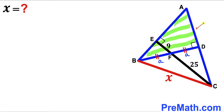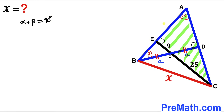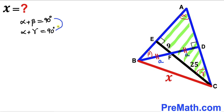Let's focus on right triangle ADB. I'm going to label one angle as alpha and another as angle beta. We know one angle is 90 degrees, so therefore the sum of angles alpha and beta must equal 90 degrees — in other words they are complementary angles. Now let's focus on right triangle AEC.